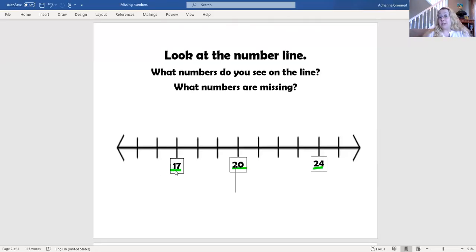Let me start with the first number on the line, 17. So if this is 17, then the next number after 17 is 18. Then comes 19, 20, 21, 22, 23, 24, and 25.